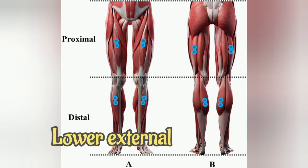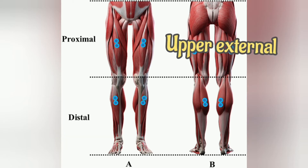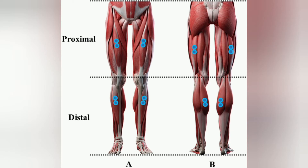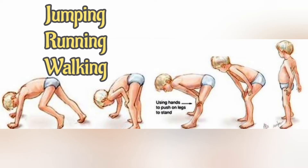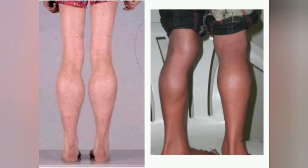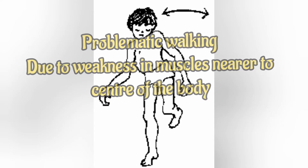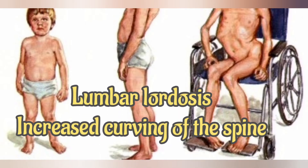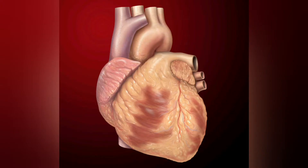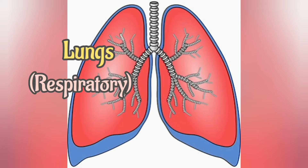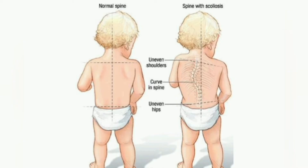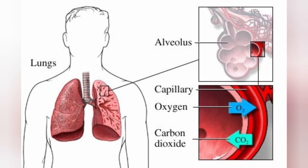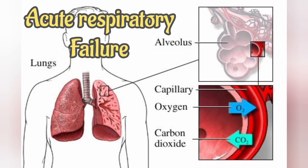Usually, the lower extremity muscles are affected before the upper extremity muscles. The affected child might have difficulty jumping, running, and walking. Other symptoms include enlargement of the calves, a waddling gait, and lumbar lordosis, i.e. an inward curve of the spine. Later on, the heart and respiratory muscles are affected as well. Progressive weakness and scoliosis result in impaired pulmonary function, which can eventually cause acute respiratory failure.